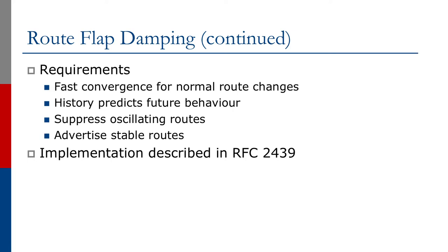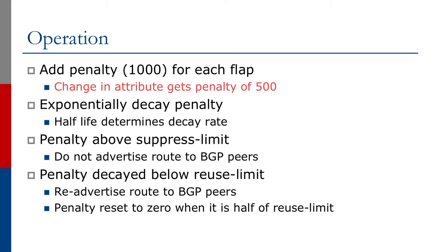The Internet RFC describing this is RFC 2439, which describes the full implementation of route flap damping. In Cisco IOS, each flap attracts a penalty of 1000, while a change in a BGP attribute attracts a penalty of 500. So if any of the BGP attributes changes, the penalty is incremented by 500.